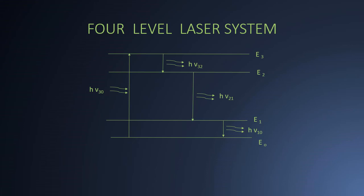After E1, the atoms spontaneously de-excited to ground state E0 and these emitted photons are of no use in case of laser. The efficiency of 4 level laser system is again given by E2 minus E1 divided by E3 minus E0.